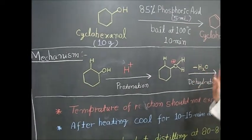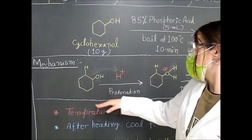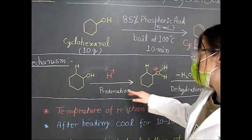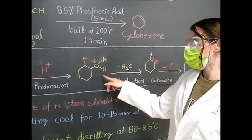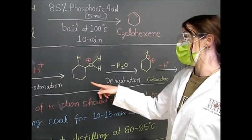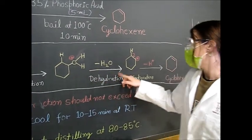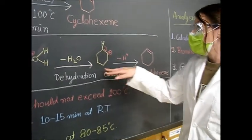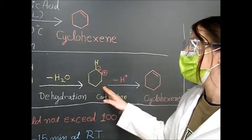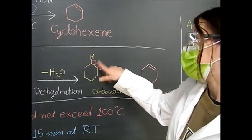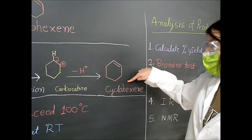The mechanism itself: we have our cyclohexanol, and through protonation we form a water molecule, which we then dehydrate — removing the water — and we have our carbocation. The proton is then eliminated and we form our cyclohexene.